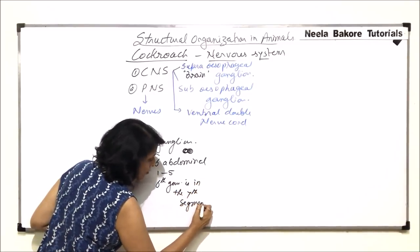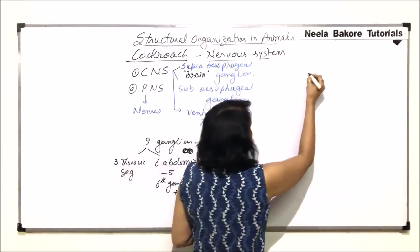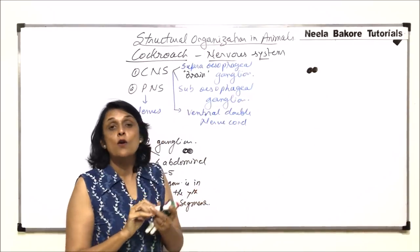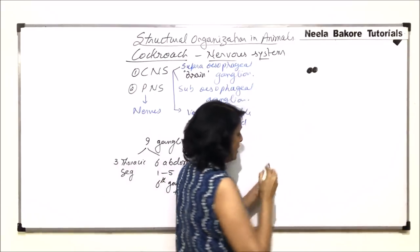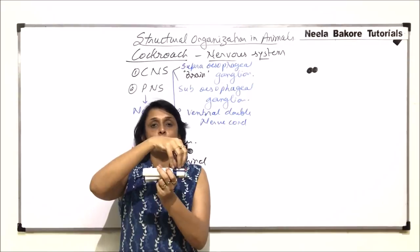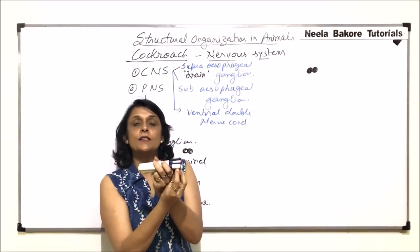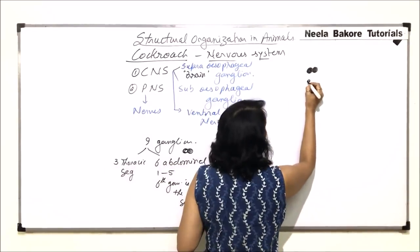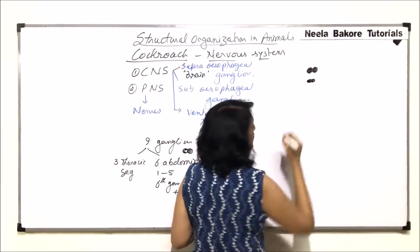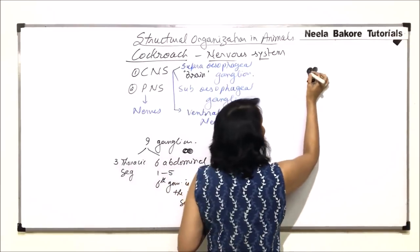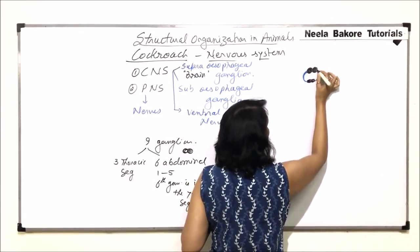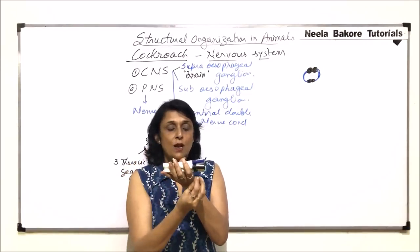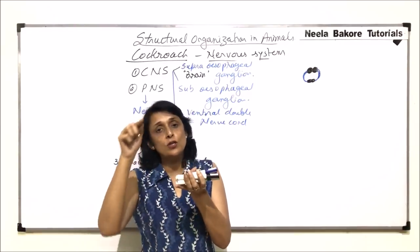Let us now draw the structure. Here is the large supraesophageal ganglion — the largest one, formed by the fusion of many neurons. Assuming the esophagus is here, above it is the supraesophageal and below it is the subesophageal. There is a space between the upper and lower one. This smaller structure below is the subesophageal. The supra and subesophageal ganglia are connected by nerve fibers known as the circumesophageal commissure.